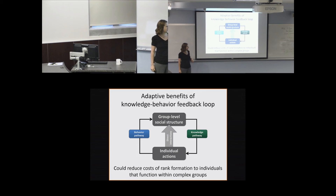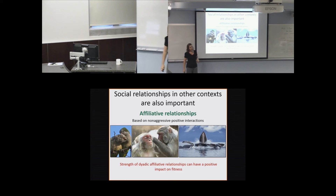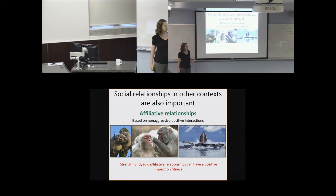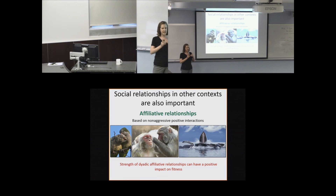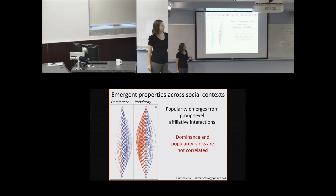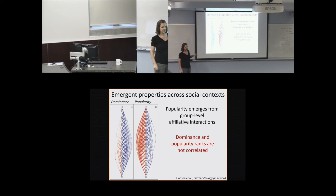In addition to relationships structured by aggression, groups can also have affiliative relationships based on non-aggressive positive interactions. The strength of these dyadic affiliative relationships can have a positive impact on fitness in many species. In contrast to the dominance analyses—which emerge as a global property—affiliative relationships are usually thought of at the level of how individuals interact with specific others and gain benefits just from relationship strength. But some of my recent research suggests that popularity, which emerges from dyadic affiliative relationships in the parakeet groups, is actually perceived as a global emergent property alongside dominance.